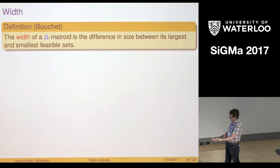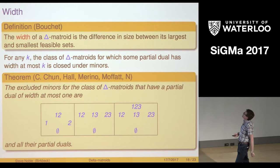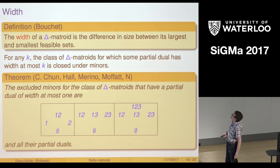If we take the width of a delta matroid to be the difference in size between its largest and smallest feasible sets, then the class of delta matroids which have a partial dual of width at most k is closed under minors. Last summer, around about the time of this meeting last year, Creel was visiting us and we found the excluded minors for width one.